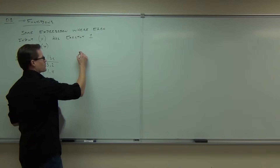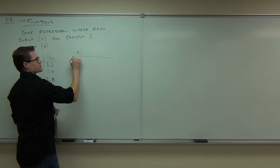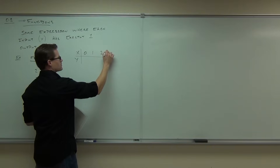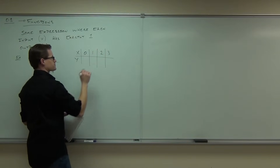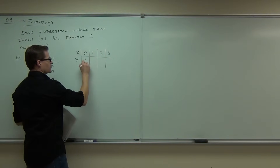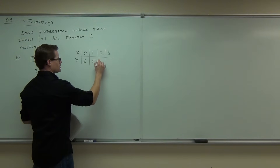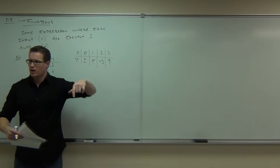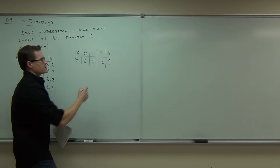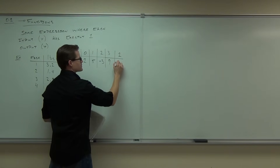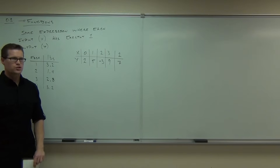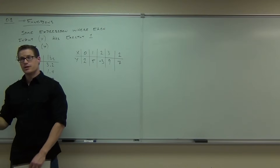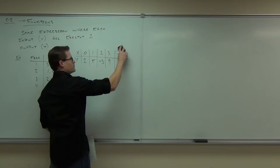We can also represent functions with a set of inputs and a set of outputs, which you might see in mathematical modeling. Every input or x has one output — that would be a function. If you had an input repeated with different outputs, that would not be a function. That's a no bueno.